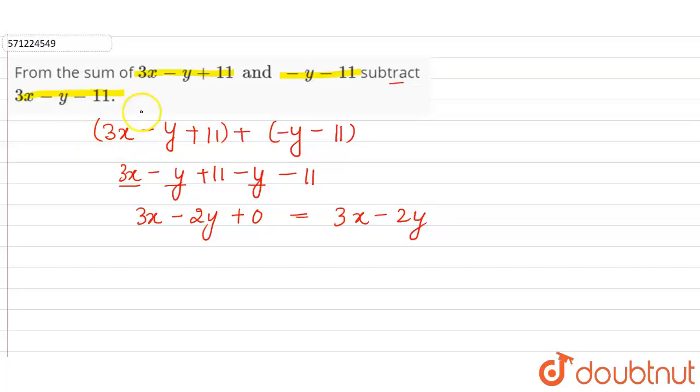Now we have to subtract from the sum. So 3x minus 2y, from this we have to subtract 3x minus y minus 11. So 3x minus 2y minus 3x plus y plus 11.